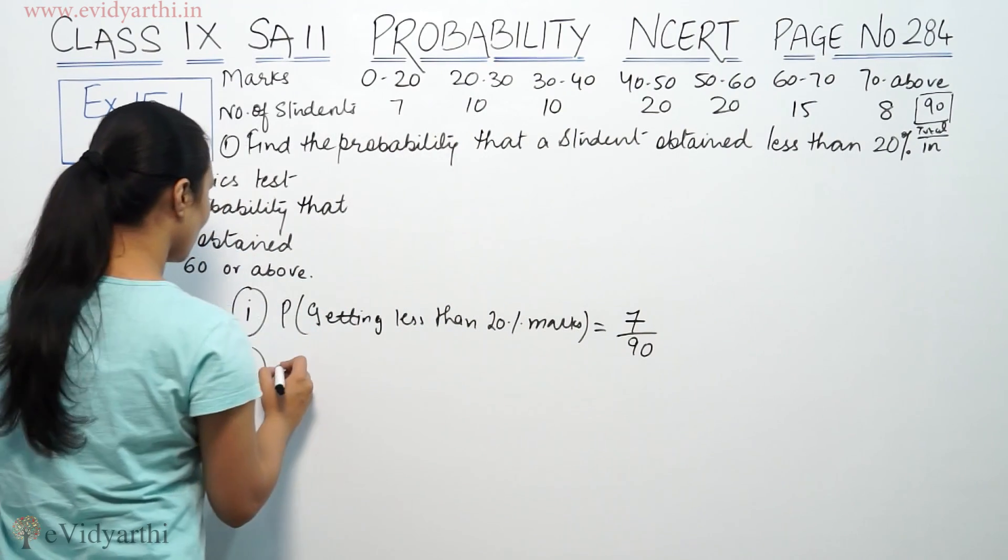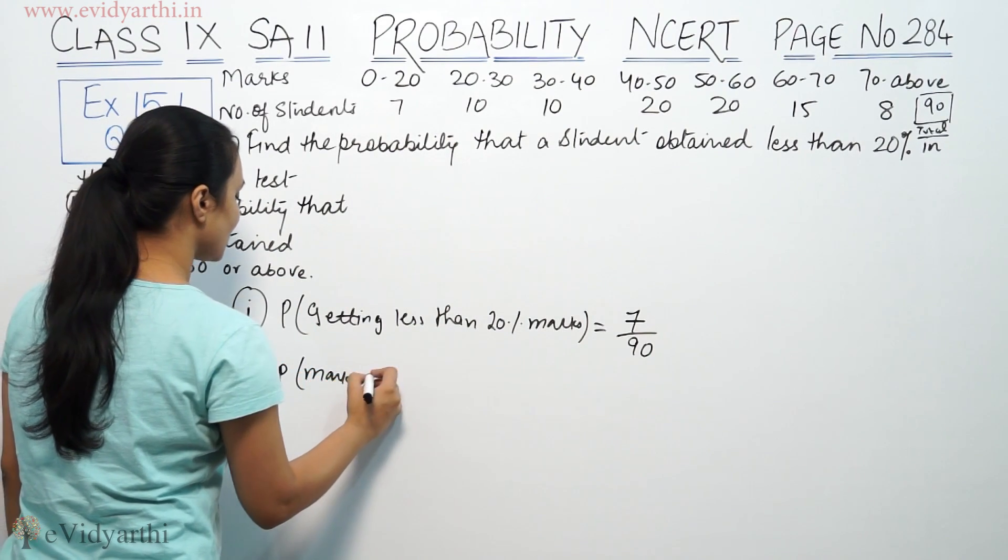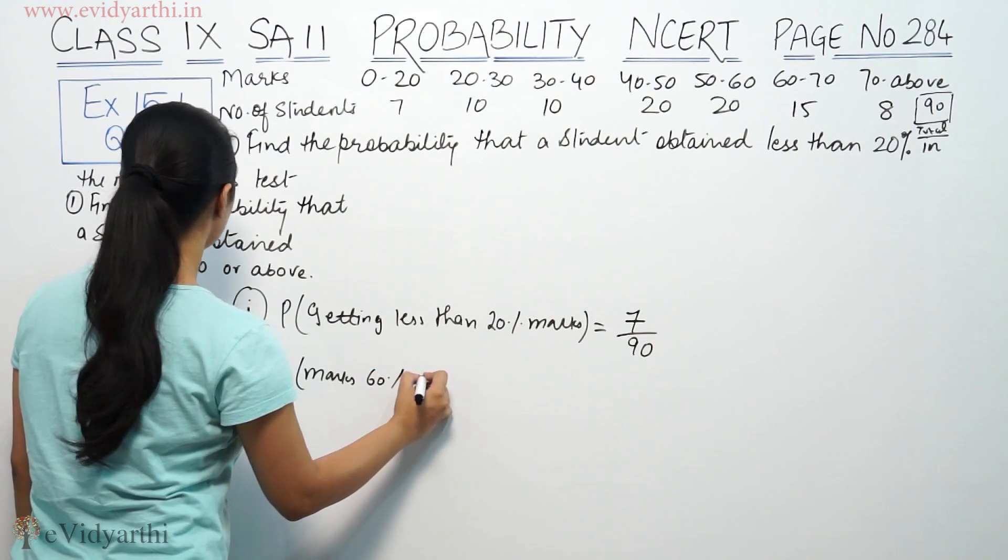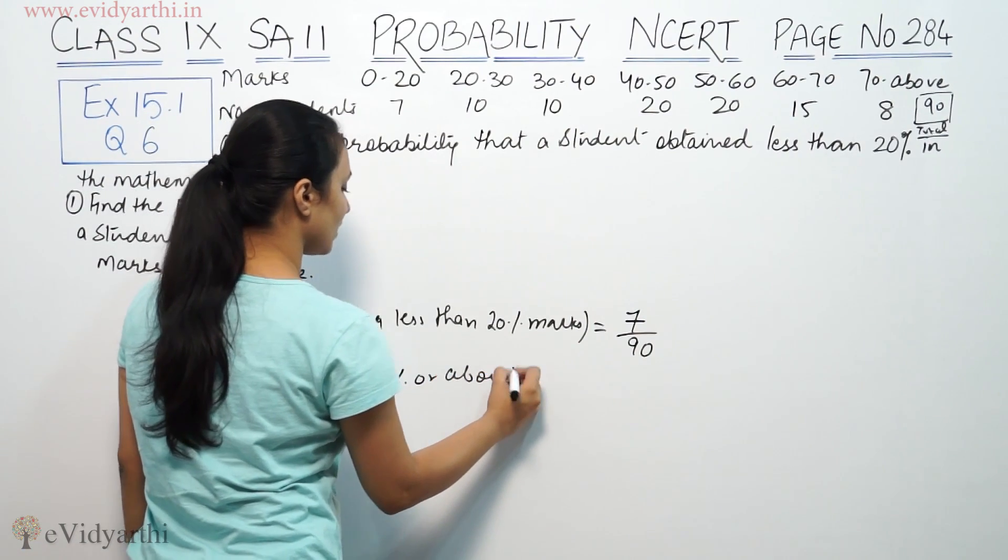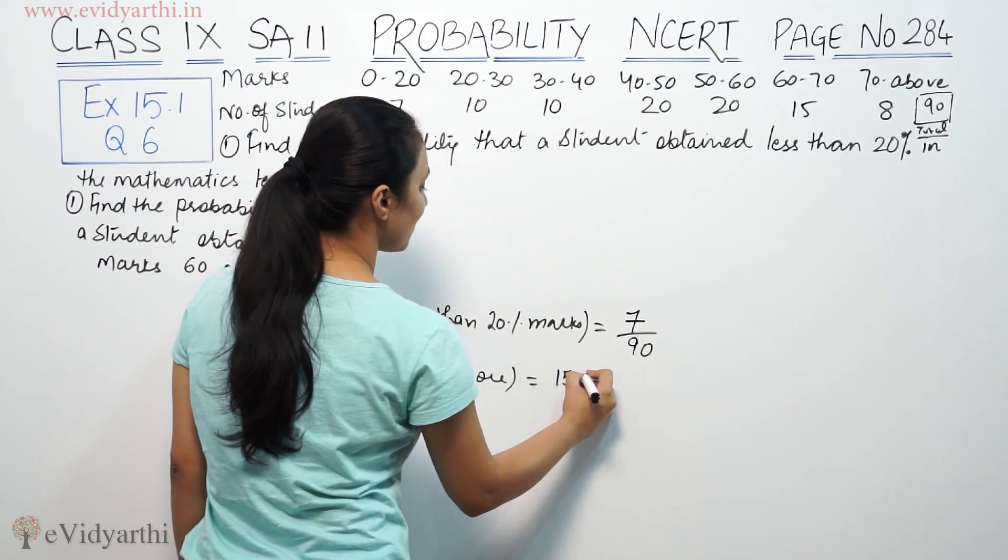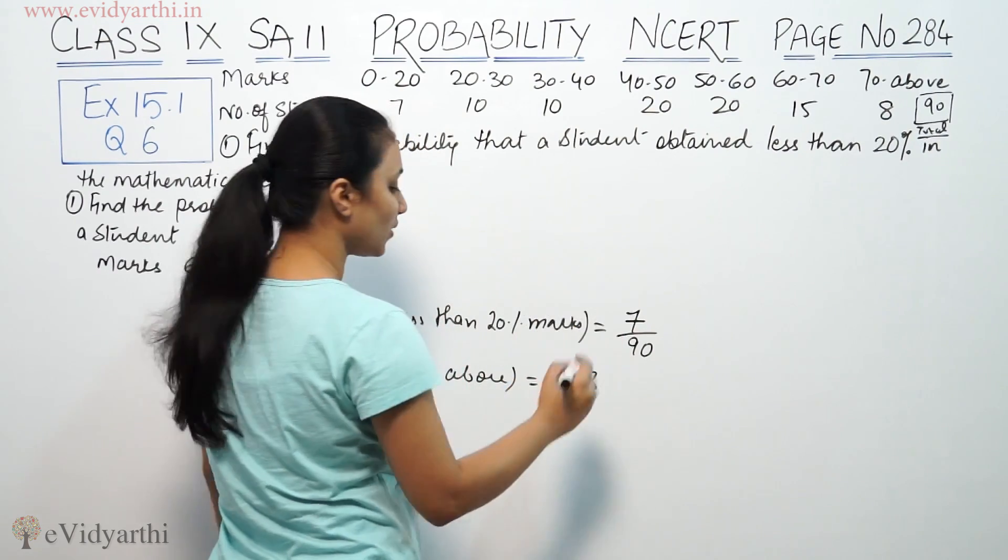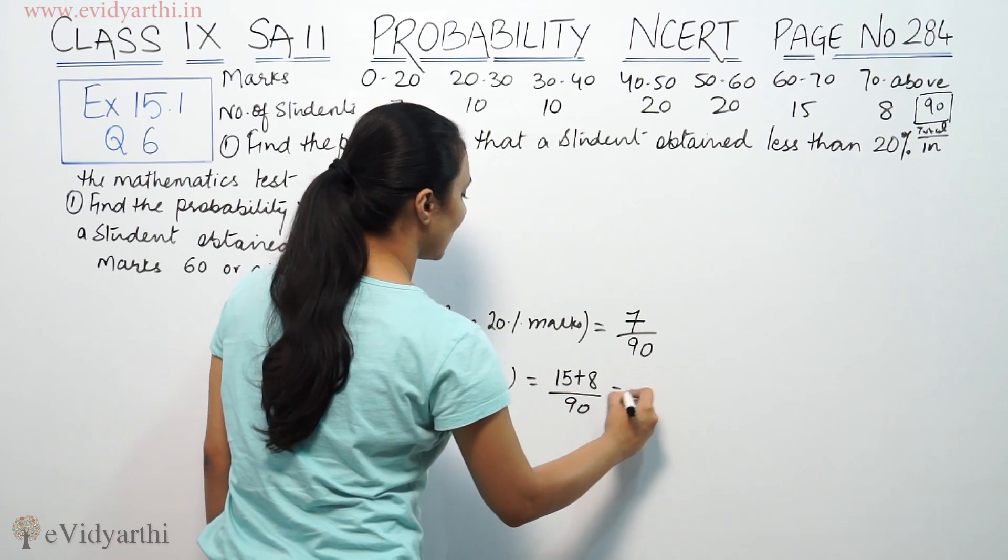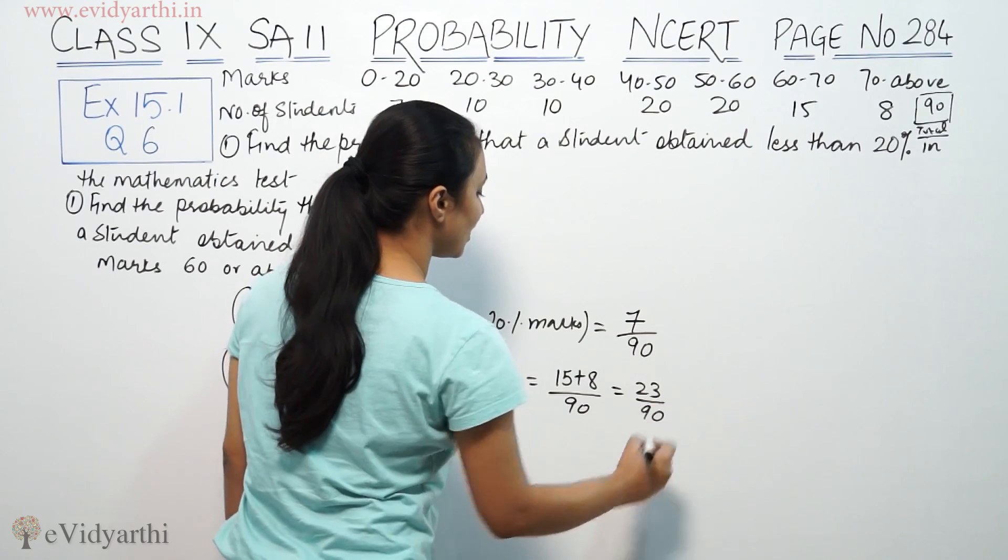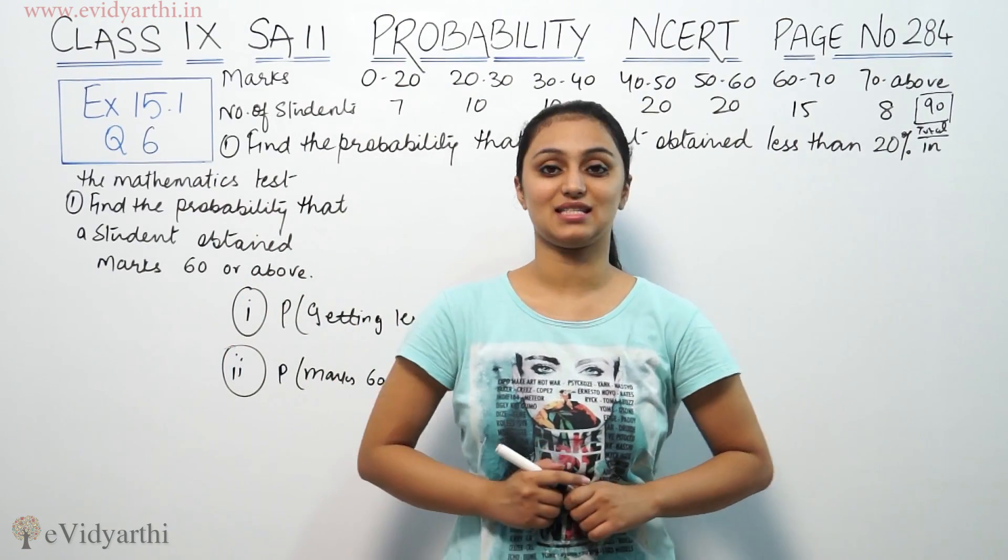So probability of marks 60% or above, that will be 15 plus 8. So 23 by 90. This value cancels out, so this will remain as it is, 23 by 90.